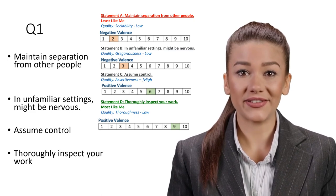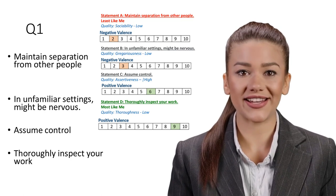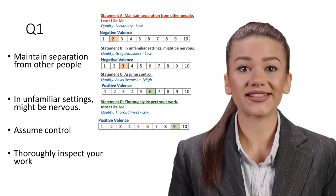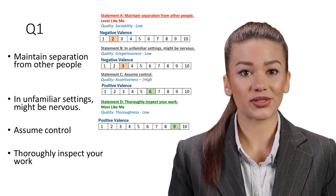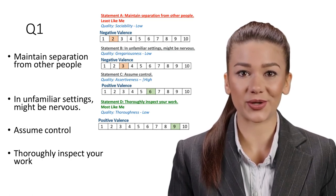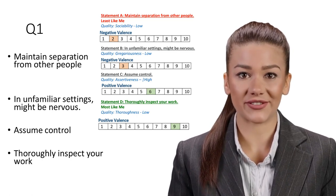Statement D: Thoroughly inspect your work. Most like me. Quality: Thoroughness, Low. Thoroughness is vital for staff of all levels and departments and especially for junior staff, often responsible for the accuracy of the small details of tasks. Thoroughness can thus be critical to the success of a project.